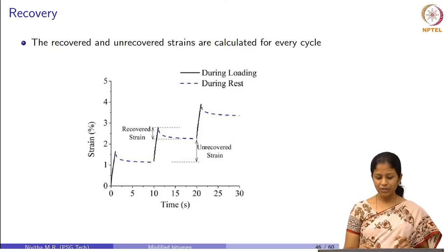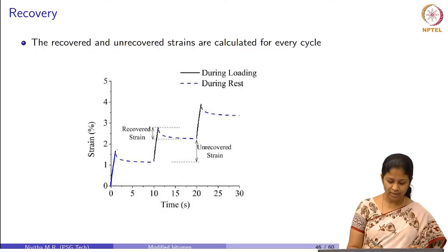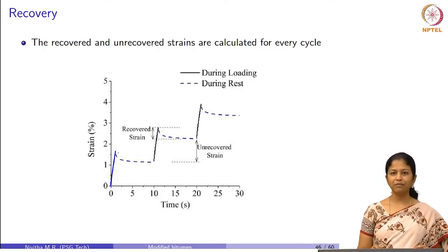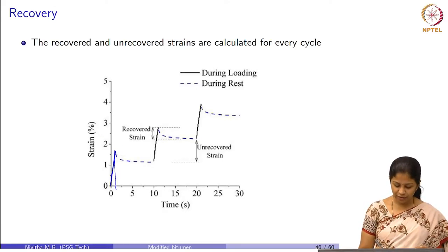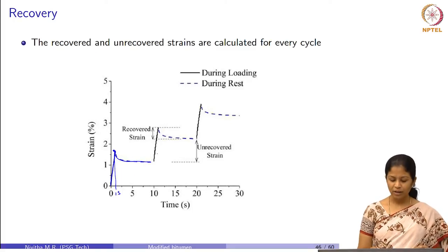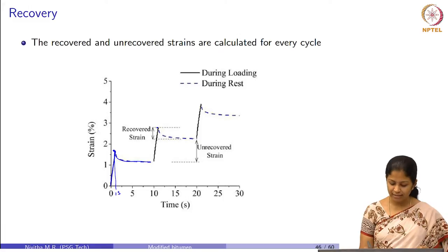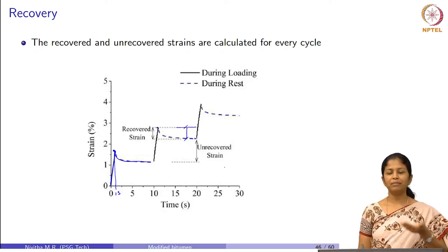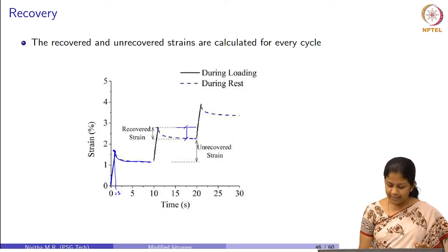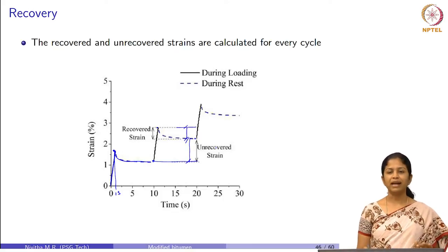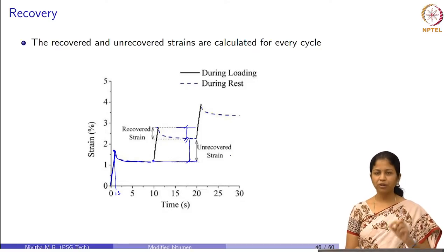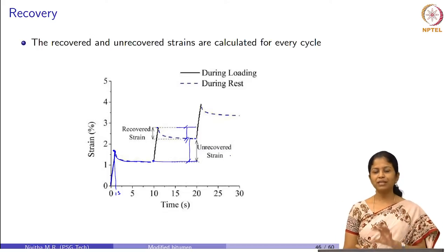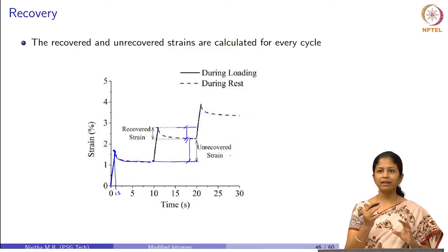The strain captured in the MSCR test is shown with the loading period as a solid line and the recovery period as a dotted line. At the end of 1 second of loading, we have a peak strain, then the strain starts to recover. The difference between the peak strain and the strain at the end of 10 seconds is the recovered strain, while the strain remaining at end of 10 seconds relative to the starting strain is the unrecovered strain. This information is used to calculate parameters that form specifications.